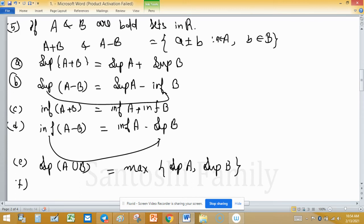F: infimum of A union B will be minimum of infimum of A and infimum of B.